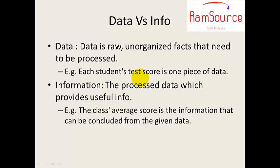So when unorganized data is organized — for example, the whole class student score is averaged — the class average score can be computed from that particular student's data. That is called information.